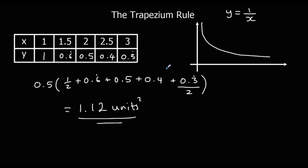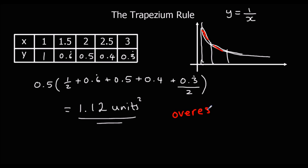If we were asked whether it's an overestimate or an underestimate: looking at where the trapeziums would go, they go over the curve, so that extra space we've included means it's an overestimate.